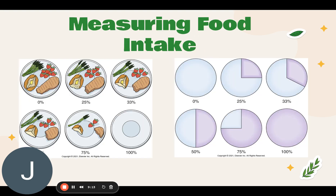Measuring food intake is always on the CNA exam. To measure food intake, you compare the food left to what was served. To estimate, you record the approximate amount of food eaten. To calculate, you subtract the amount left from the amount served, then divide by the amount served, and multiply by 100. In the facility, you'll often just estimate how much a patient ate and report that to the nurse — for example, 25% or 50% of their meal.